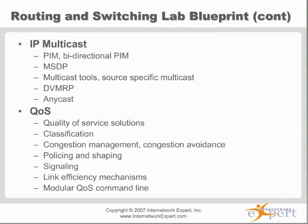We talked about PIM and basic multicast, bi-directional PIM — really simple to implement, covered in the class on demand. Topics like MSDP, DVMRP, or anycast are kind of listed as scare words. You definitely need your basic multicast config going before worrying about those. The likelihood of getting a lot of points on MSDP, anycast, or DVMRP is pretty slim — two points, three points max. It's probably going to be a little two-point topic.